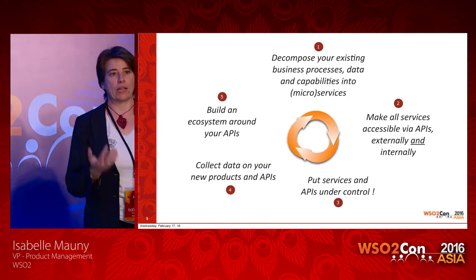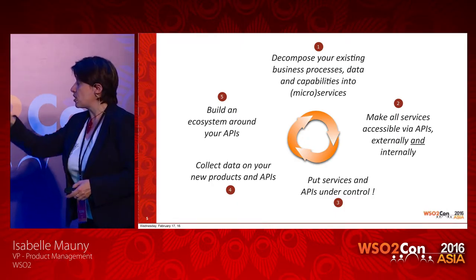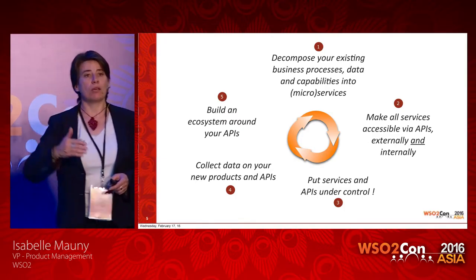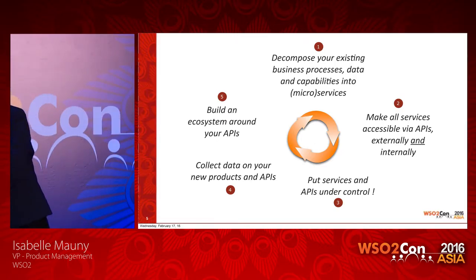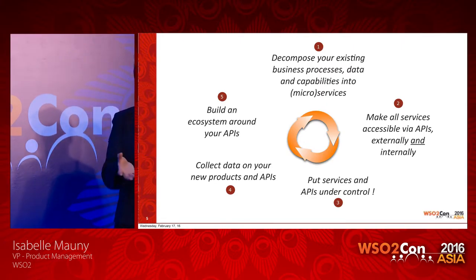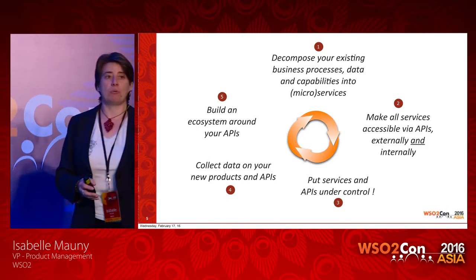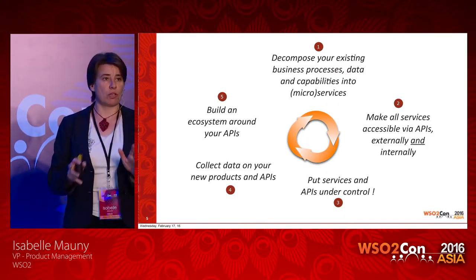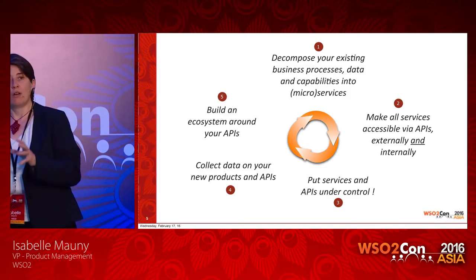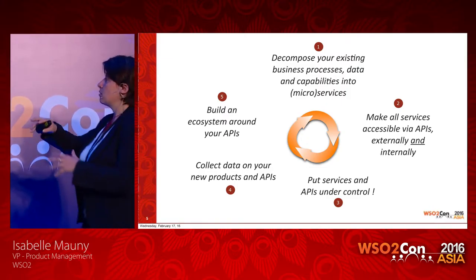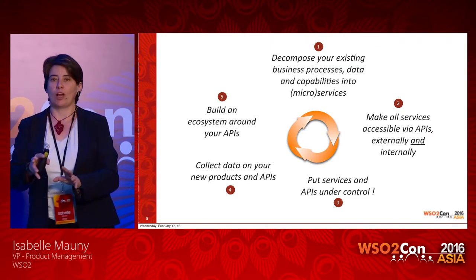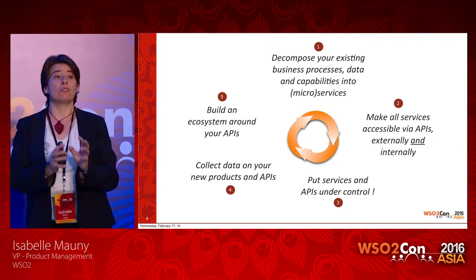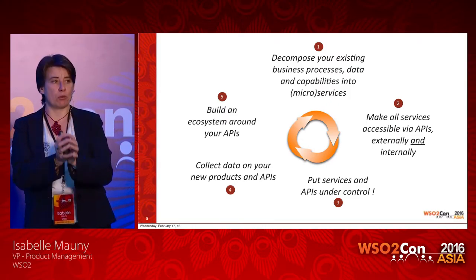So how do you actually go and do this? This is what we've seen happening over and over again at many of our customers. Start by decomposing your business functionality, your business processes, your data into something which is consumable — those are the services we're talking about. Don't start by just doing APIs and tapping directly into a mainframe — you're going to get into real problems. You really have to build the right architecture around accessing this backend information. That means decomposing as services or microservices — basically, scoped functionality that people can reuse.